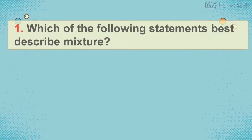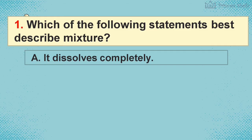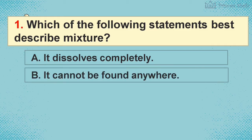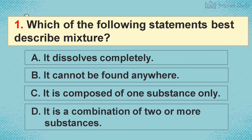1. Which of the following statements best describe mixture? A. It dissolves completely. B. It cannot be found anywhere. C. It is composed of one substance only. D. It is a combination of two or more substances.